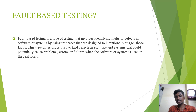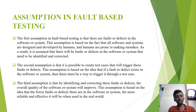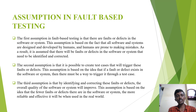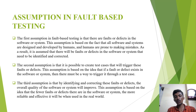Now let's see the assumptions in Fault-Based Testing. The first assumption is that there are faults or defects in the software or system. This assumption is based on the fact that all software and systems are designed and developed by humans, and humans are prone to making mistakes. As a result, it is assumed that there will be faults or defects in the software or system that need to be identified and corrected. The first assumption clearly tells us that humans make mistakes, and those mistakes only make them perfect. Like this, to make software perfect, we need to identify mistakes and correct them.